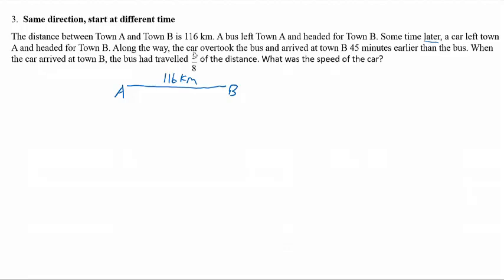Along the way, the car overtook the bus and arrived at town B 45 minutes earlier than the bus. That means when the car reached town B, the bus is still behind. Even though the car started later, because the car's speed is faster, it overtook the bus and arrived at town B earlier.